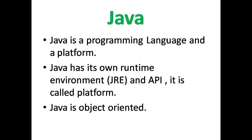So, why is Java a platform? Because Java has its own runtime environment, JRE and API. That's why it is called a platform.